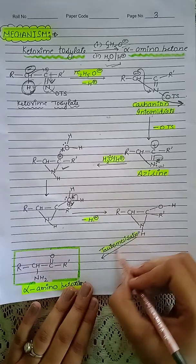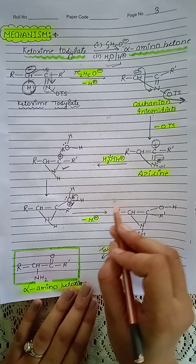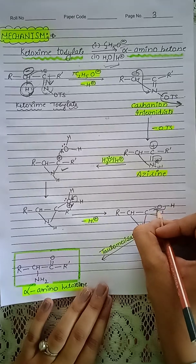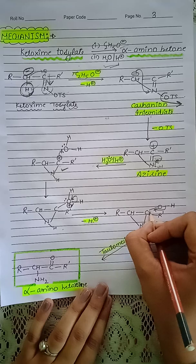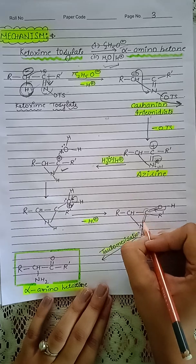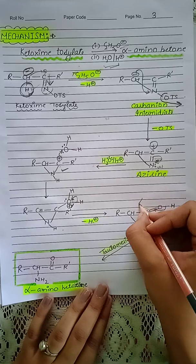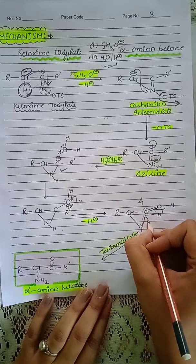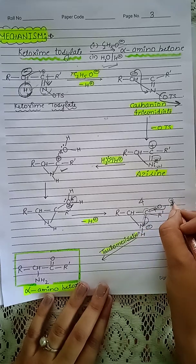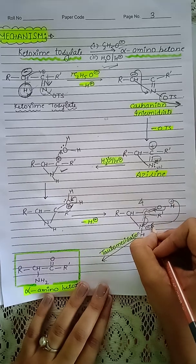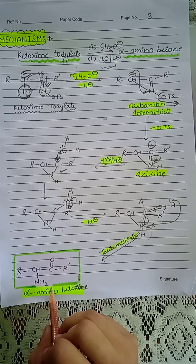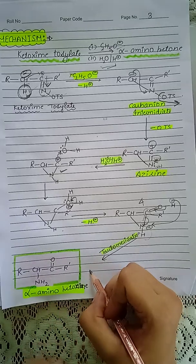Upon tautomerization of this product, the electrons shift to form C double bond O. Counting the bonds on this carbon gives five bonds, but carbon can only have four bonds, so one bond breaks and nitrogen gets a negative charge. The hydrogen shifts to give NH2. We get the final product, which is alpha-aminoketone.